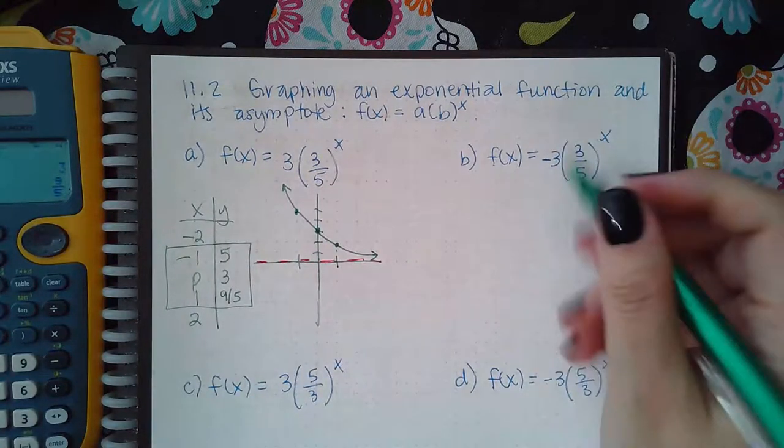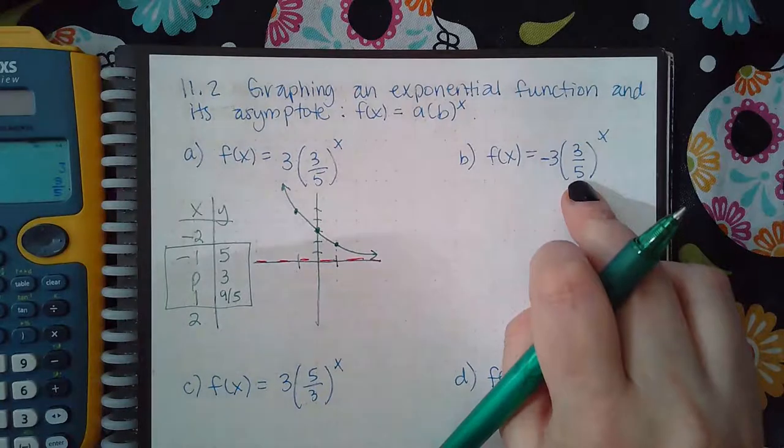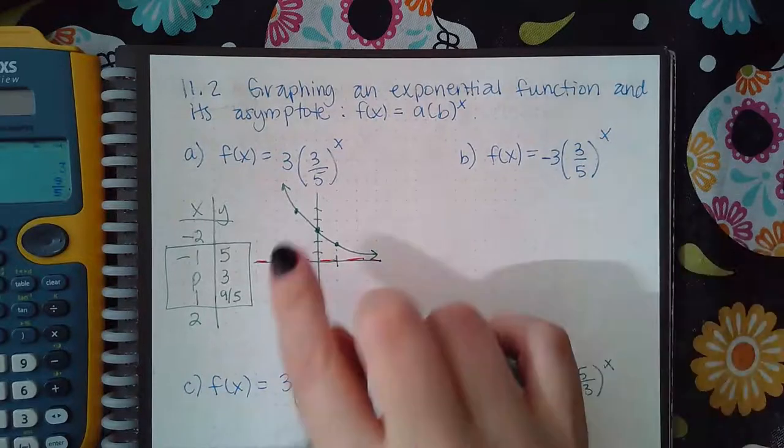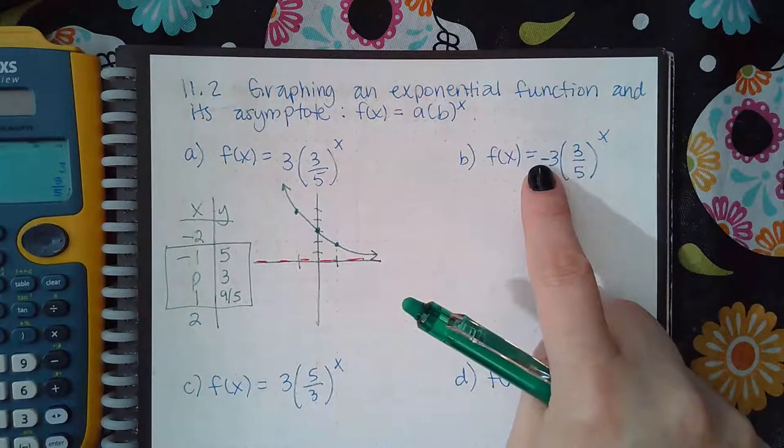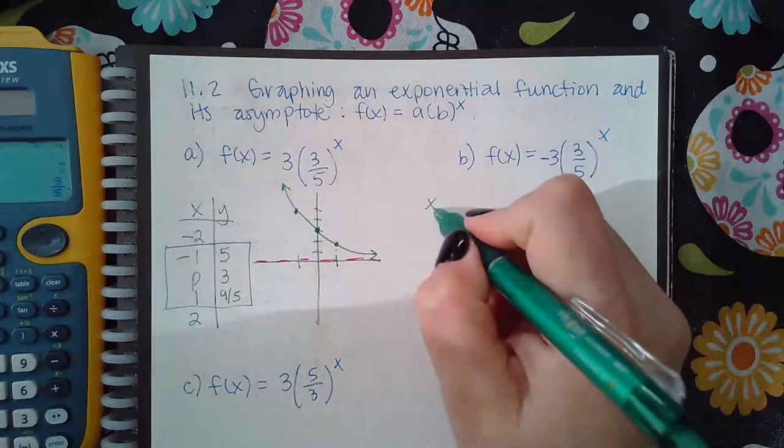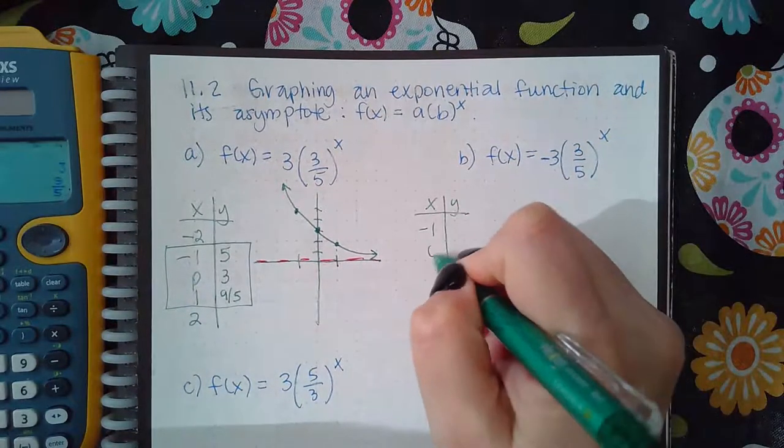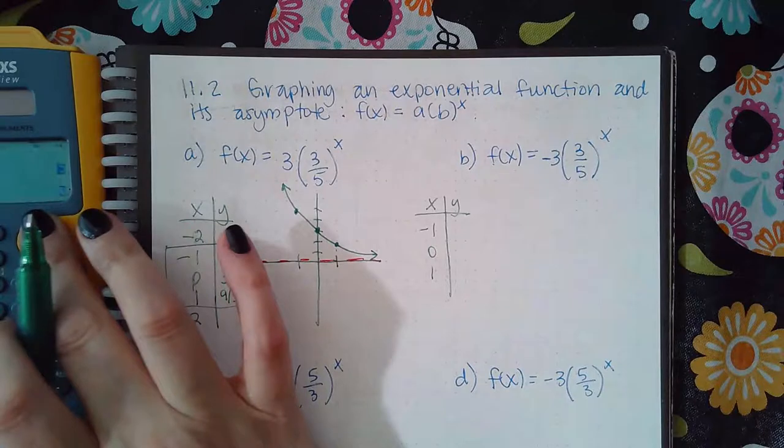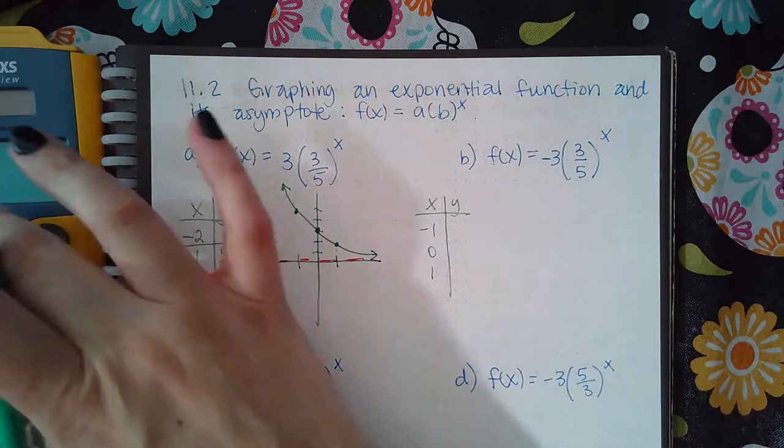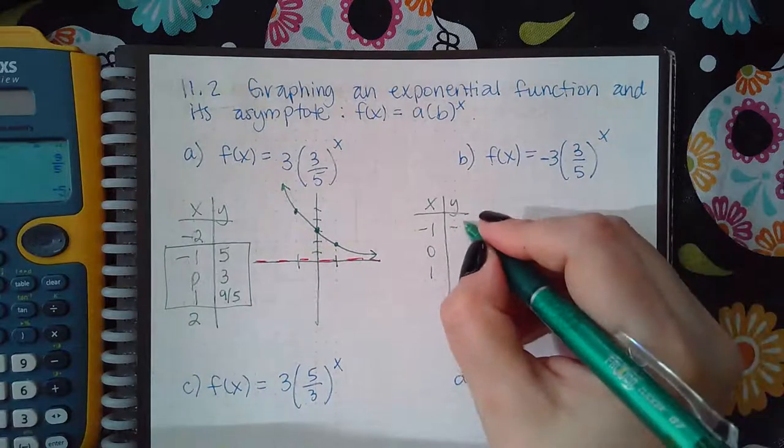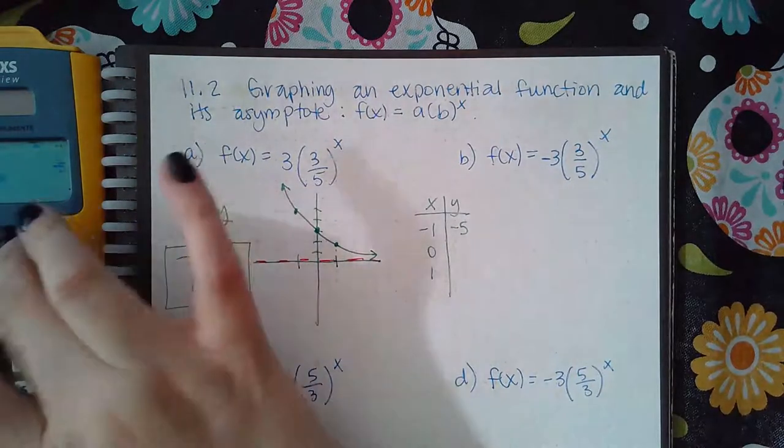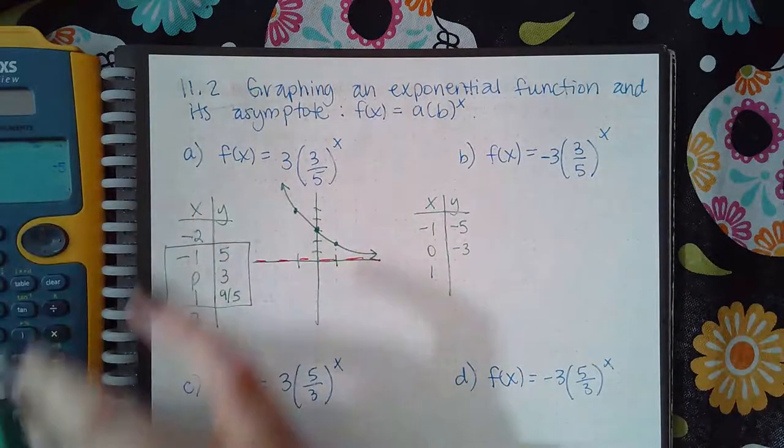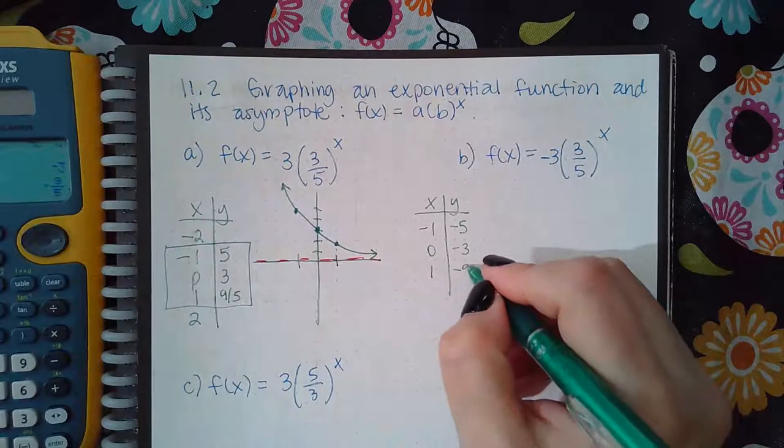Now let's do this one here. This base is also less than one. So it should be going to the left side. But I don't think it's going to be going up on the left side. Why? Because negative is going to reflect everything. But if you don't know your transformations that well, you can just figure the points and it will work itself out. So let me go back to my calculator and get to the front. Let me insert a negative. I get negative five, negative three and negative nine fifths.